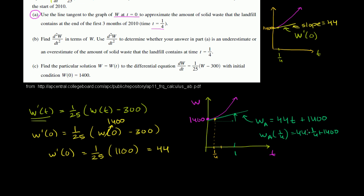And so 44 times 1 fourth, or 44 divided by 4, is 11 plus 1,400. And so you add them together, you get 1,411, or 1,411 tons. This is our approximation. We just took the slope from our starting point and used that slope as an approximation. It probably is not the exact amount of tonnage based on the actual function w, but it's an OK approximation. But that's our first answer for part A, 1,411 tons.